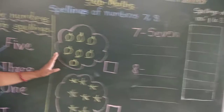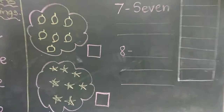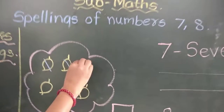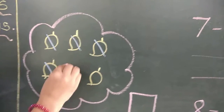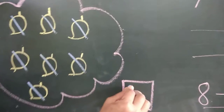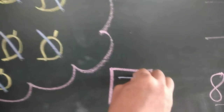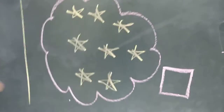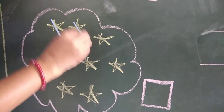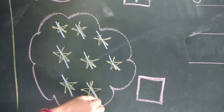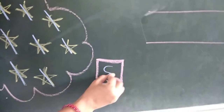Now see here. I have drawn here: 1, 2, 3, 4, 5, 6, 7. So in this box I am going to write number 7. Now see here — here are many stars. Count with me: 1, 2, 3, 4, 5, 6, 7, 8. So in this box I wrote 8.